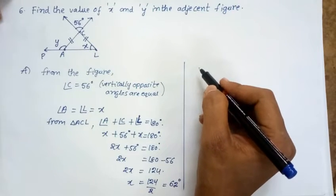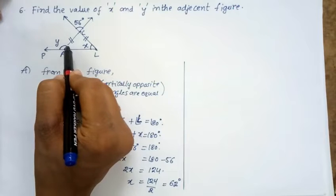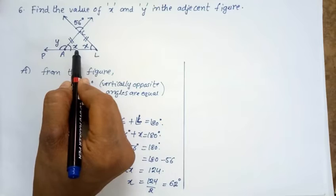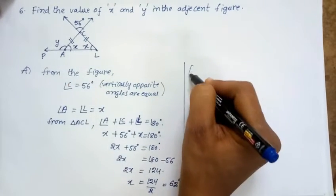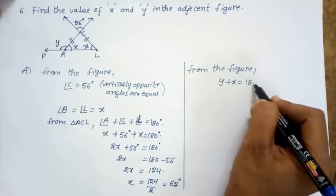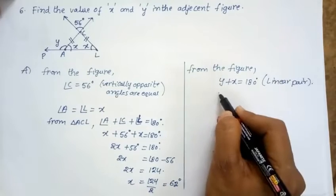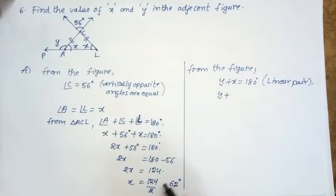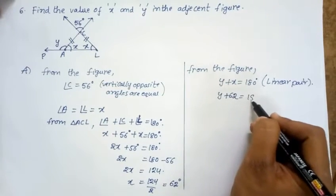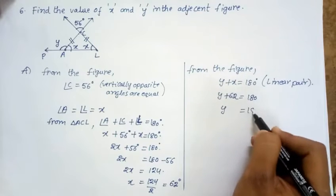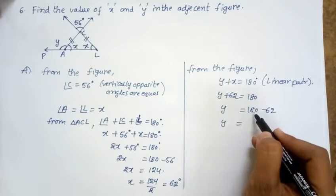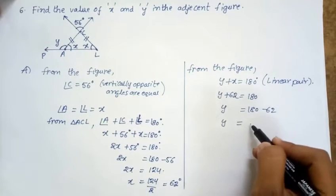Next, to find the Y value. The angle Y plus X equals 180 degrees because of linear pair. From the figure: Y plus X equals 180 degrees. Substituting X equals 62 degrees: Y plus 62 equals 180. So Y equals 180 minus 62, which becomes 118 degrees.